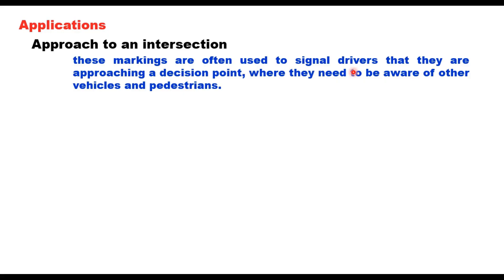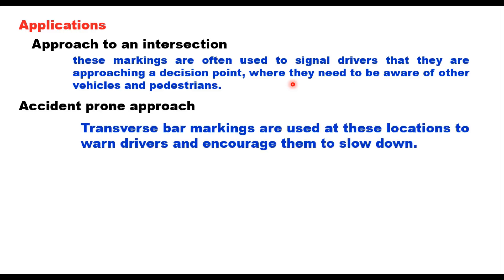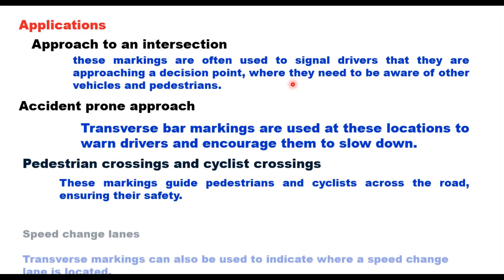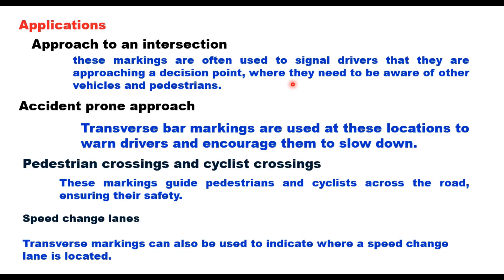There are several applications of transverse bar markings. On approaches to intersections, they signal drivers that they are approaching a decision point where they need to be aware of other vehicles and pedestrians. Near accident-prone approaches, these markings warn drivers and encourage them to slow down. Near pedestrian and cyclist crossings, they guide pedestrians and cyclists across the road ensuring their safety. They can also be used near speed change lanes to indicate where a speed change lane is located. Thank you very much for watching this video — if you have any questions you can write in the comment box.